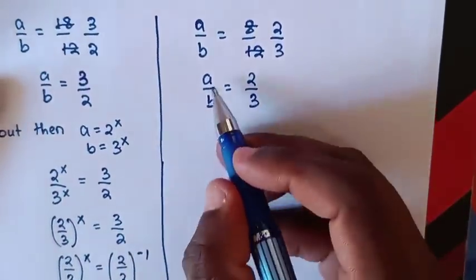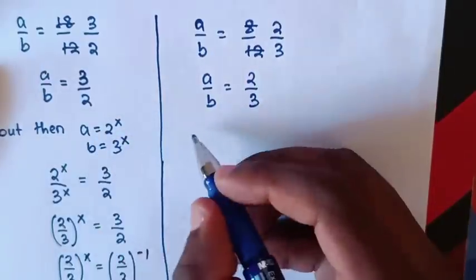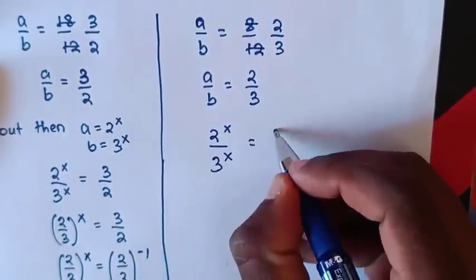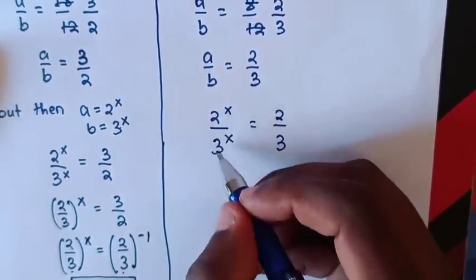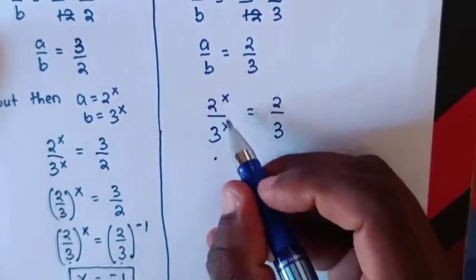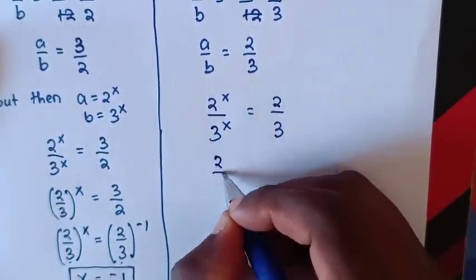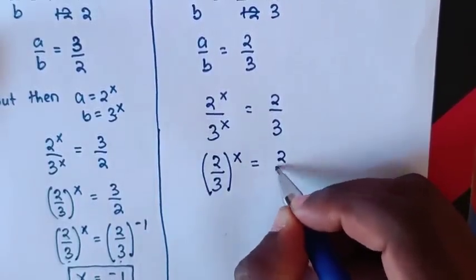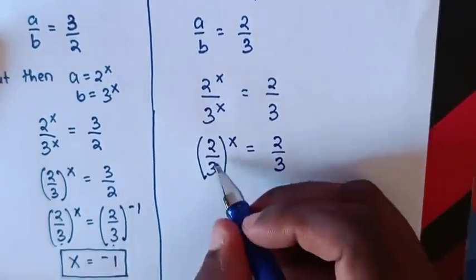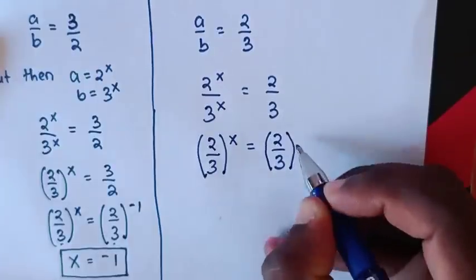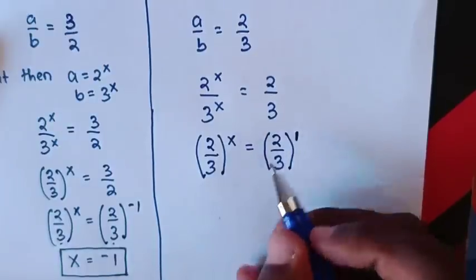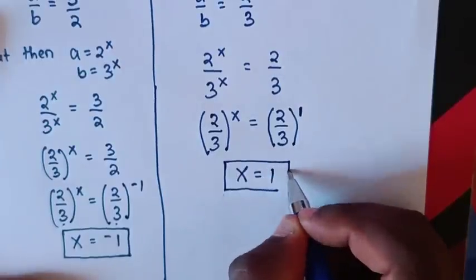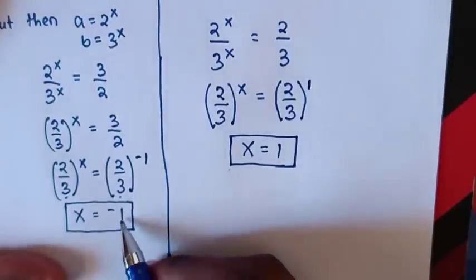For the second case, a/b = 2/3 means 2^x / 3^x = 2/3, so (2/3)^x = (2/3)^1. Since the bases are the same, we compare powers: x = 1. Therefore, the values of x are −1 and 1.